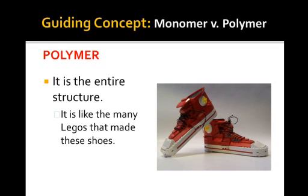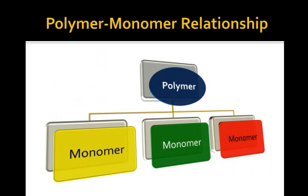The polymer, by contrast, is the entire structure. You can see that these Lego constructions are built from many smaller parts. 'Poly' means many, 'mer' means part — it is the large thing built from small parts. You need to grasp the relationship between monomer and polymer: a polymer is broken down into many different kinds of monomers, and there are four main kinds of polymers.